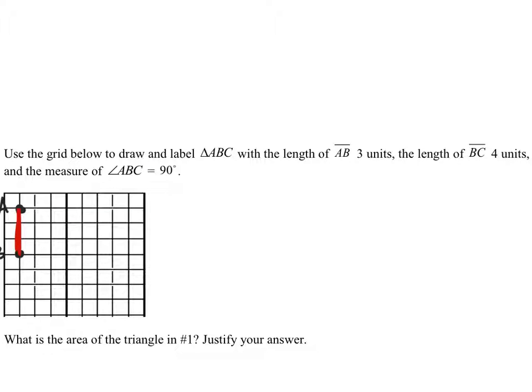And then the measure of BC, so starting from B and going to C is 4 units. And not only this, but the angle, that is not a triangle, but angle ABC is 90 degrees.